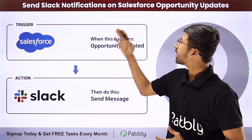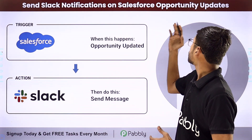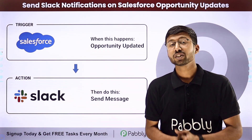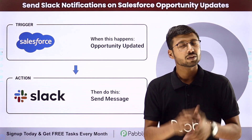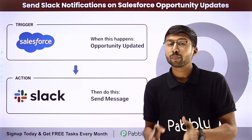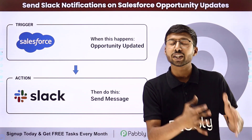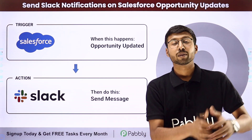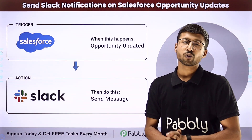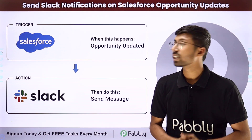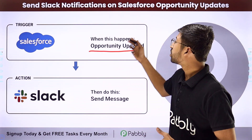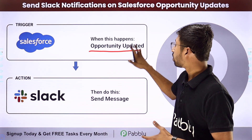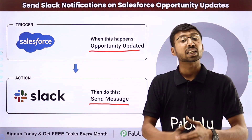In this video, we will learn how to send Slack notifications on Salesforce opportunity updates. Suppose you are a business owner or running some kind of organization and you are using Salesforce as a CRM application. Whenever you update the status or any details in an opportunity created in Salesforce, you want to update your team members as well. We are going to set up an automation so that whenever a new opportunity is updated in our Salesforce account, the details will be sent as a channel message on our Slack channel.